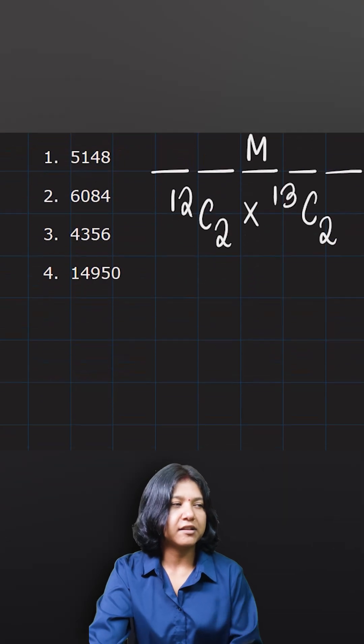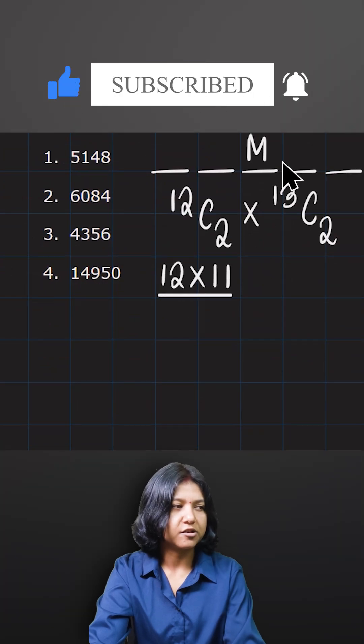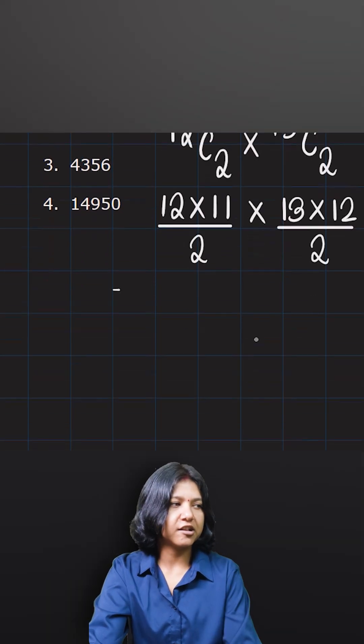12C2, how can you find that? It's just 12 times 11. Go backward one time and then you divide it by 2. Similarly, if you have 13 letters to choose, you'll do 13 times 12. You divide it by 2. And now you can just do your calculation.